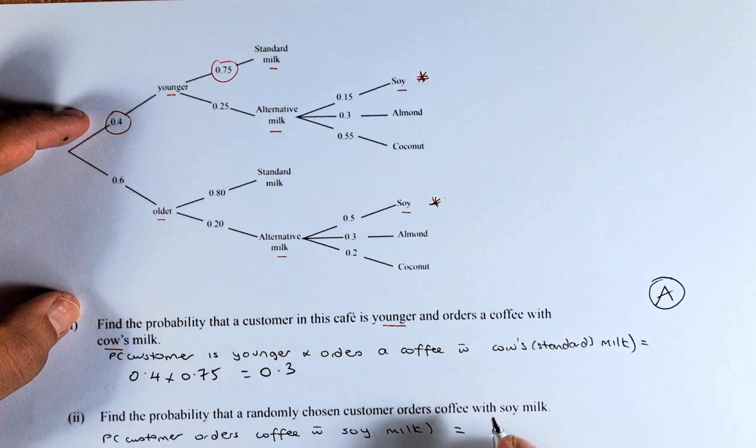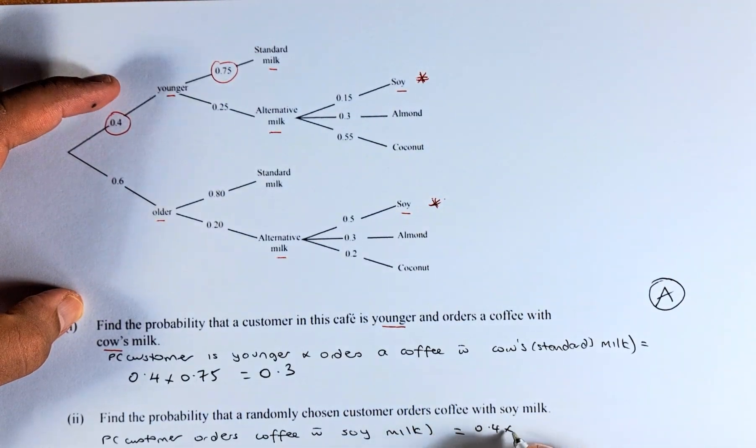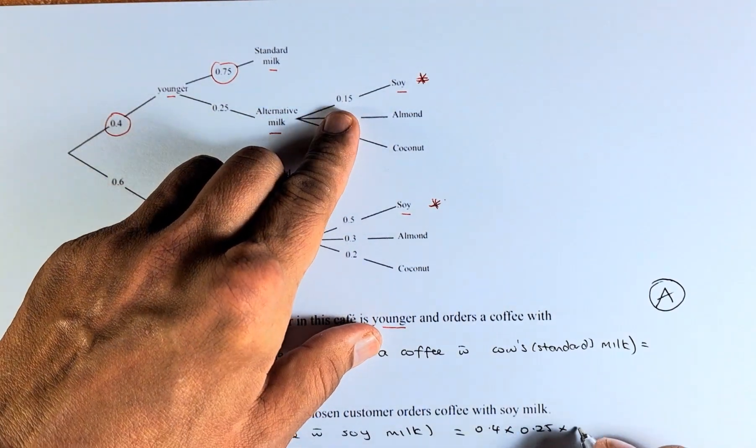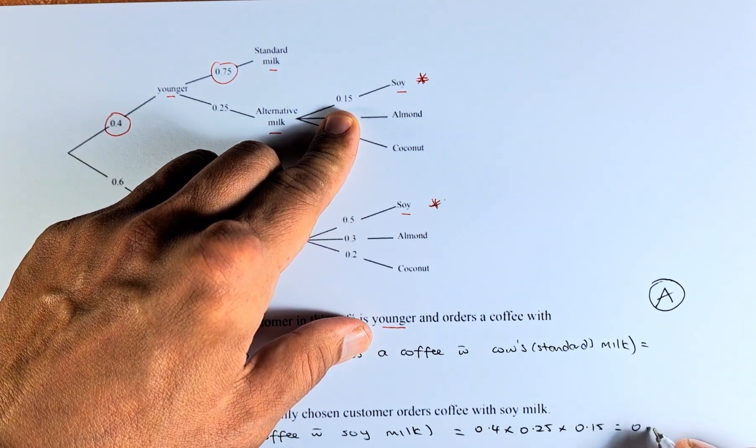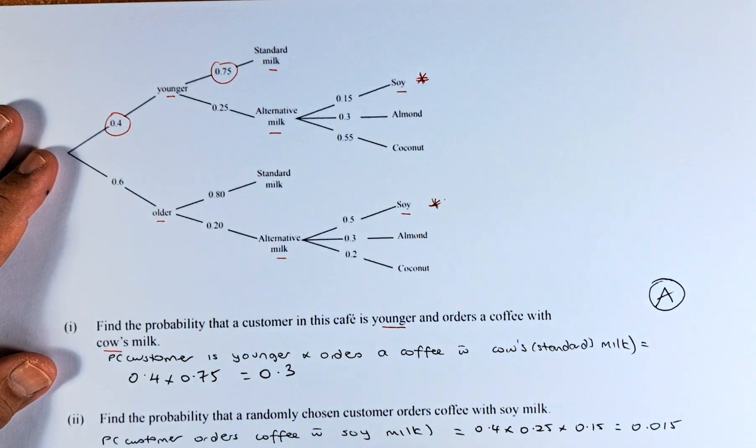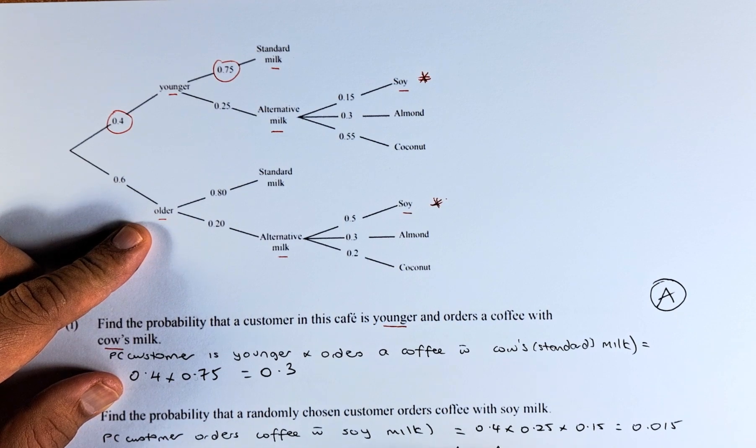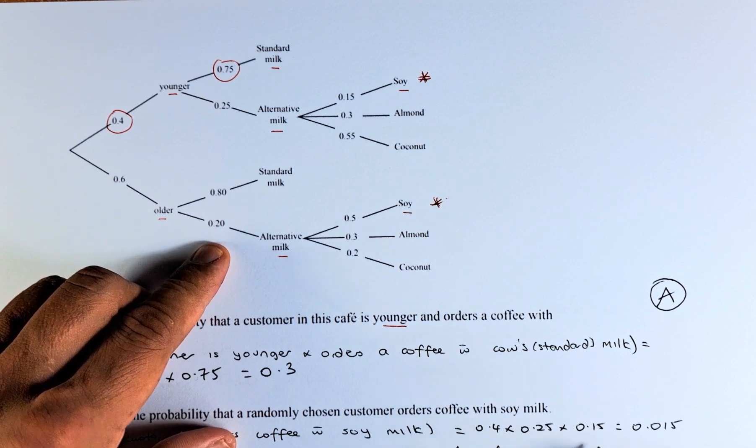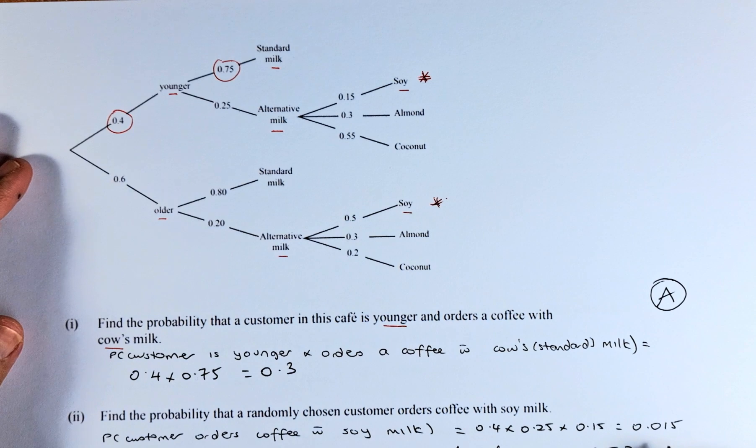So you need to add 0.4 because younger, 0.4 times 0.25 multiplied by 0.15. And if you put in your calculator, that will give us a total of 0.015, or it could also be older. So 0.6 plus times 0.2 multiplied by 0.5. Put in your calculator and the answer is going to be 0.06.